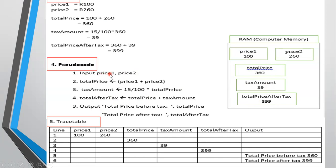For example, if you input 500 and 370, those values go into the memory locations and when working out total price, the computer goes to those locations, pulls out the values, works out the answer, and stores it. Because your inputs can change, we use memory locations — you will not have actual input values in your pseudocode, only references to memory locations.